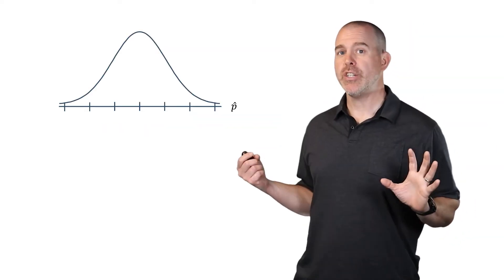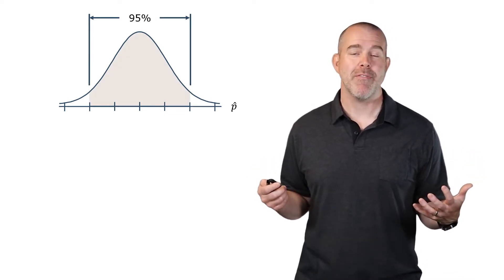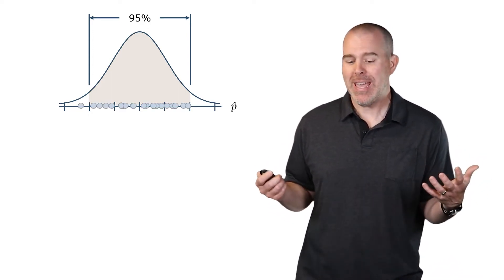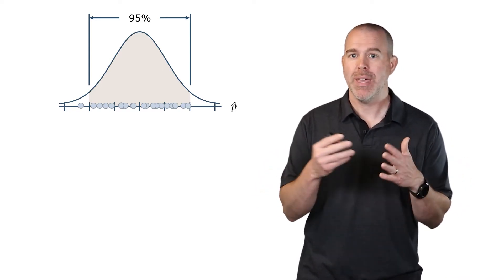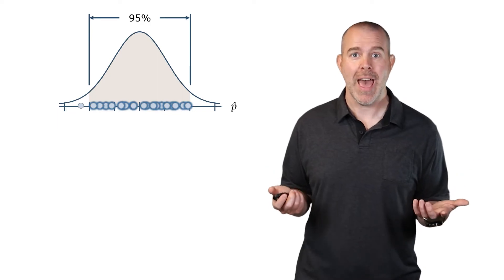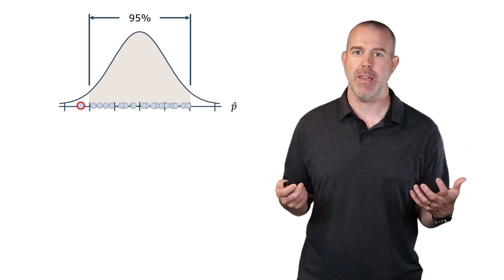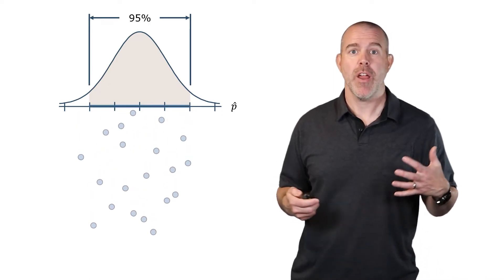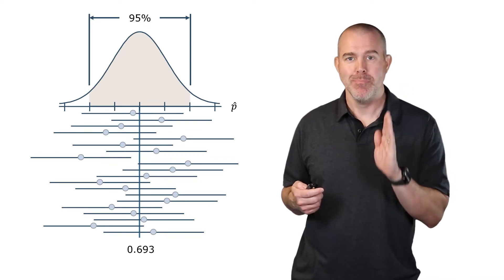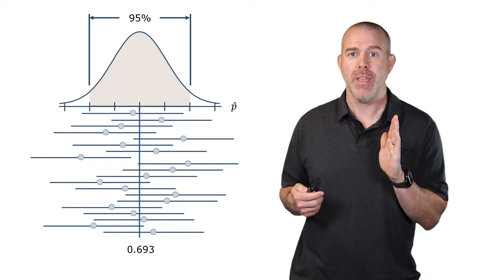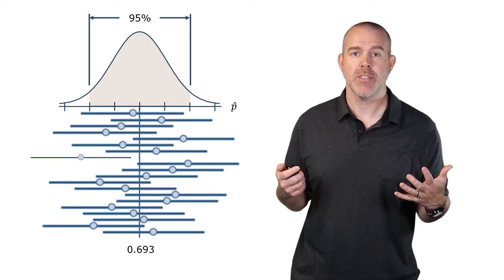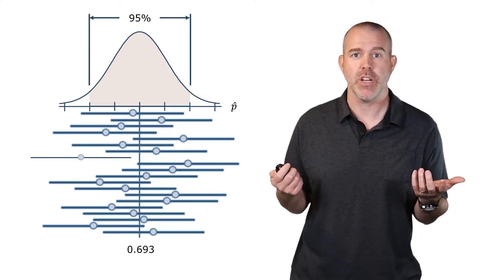Here's a visual to help. Looking at the distribution of the sample proportion, about 95% of all observations should be within two standard deviations. If we take 20 random samples, we'd expect about 19 of them to fall within that band and maybe one outside. Dropping those down and adding the margin of error — plus or minus two standard deviations — about 19 of the 20 confidence intervals, or 95%, would actually contain the true population proportion.